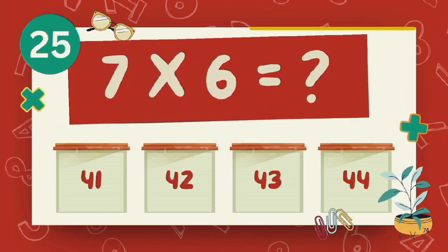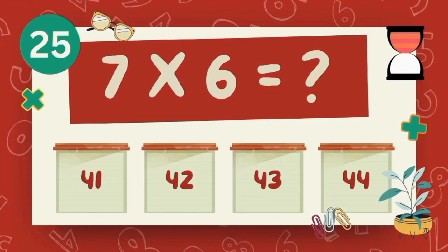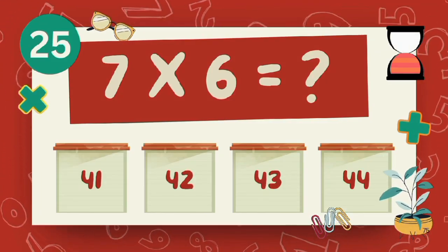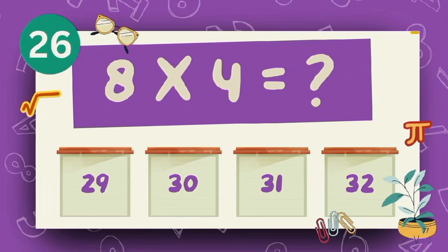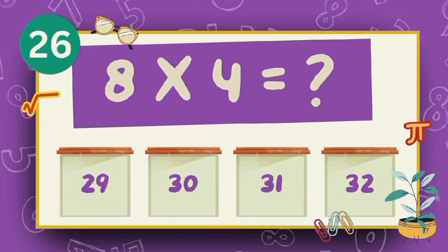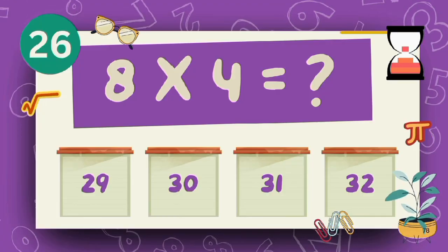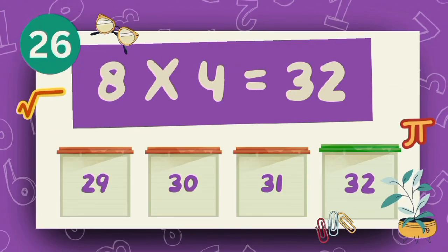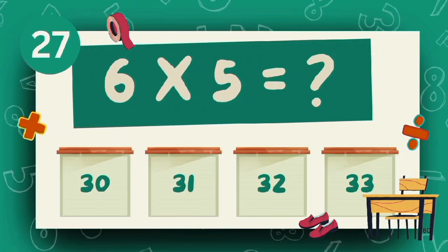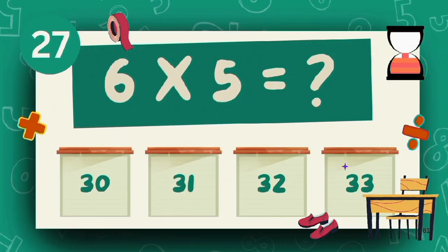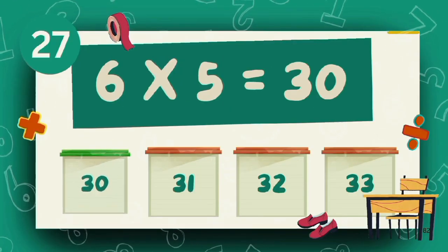What does 7 multiply 6? The answer is 42. What does 8 multiply 4? The answer is 32. What does 6 multiply 5? The answer is 30.